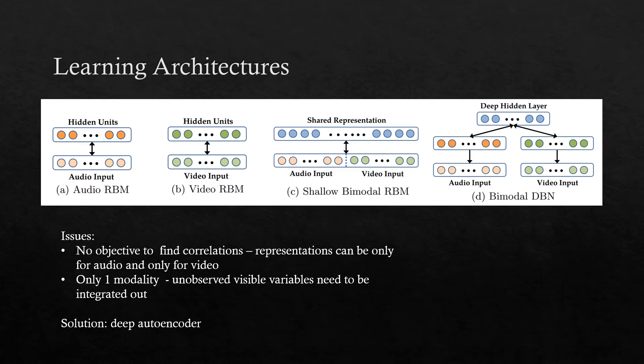These are the RBM pre-training models discussed in the study. Figures A and B are the most straightforward approach where audio and visual are trained separately, and this method was also used as a baseline to compare the results. Figure C is the shallow model where an RBM is trained over integrated data — both audio and visual — but this model is not good for learning correlations across modalities.